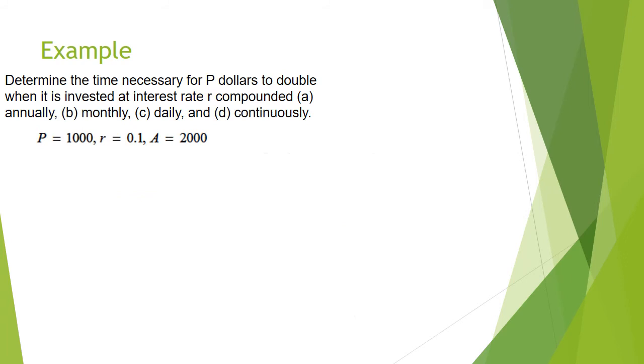Now you're going to determine the time necessary for P dollars to double. So if you're starting with $1,000, remember you're going to go to $2,000. And interest rate R, compounded annually, monthly, daily, and continuously. So you're going to use the formula for A, B, and C. You're going to use the formula we used on the last problem. And then for D, you're going to use the PERT formula. Pause the recording, give it a try, and resume to check your answer.